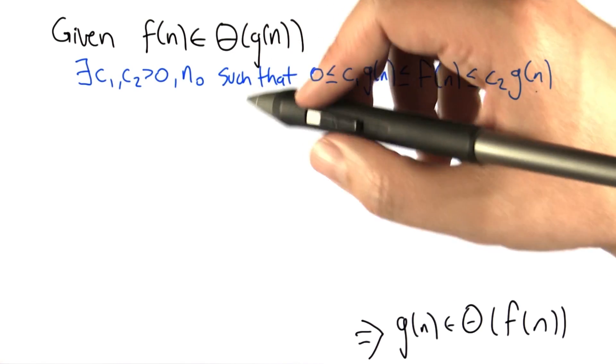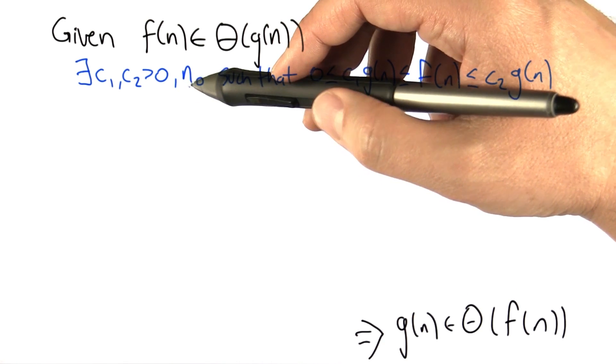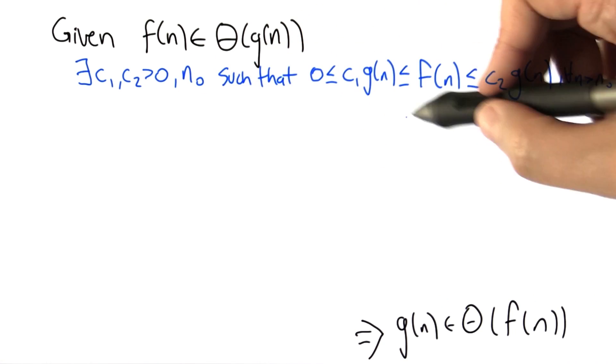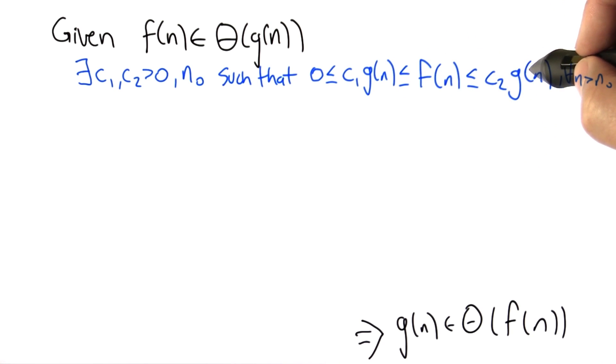Here's the definition: there's some constant c1 and c2 bigger than 0 and a threshold n0, such that f lies between c1 of g of n and c2 of g of n for all n bigger than the threshold n0.